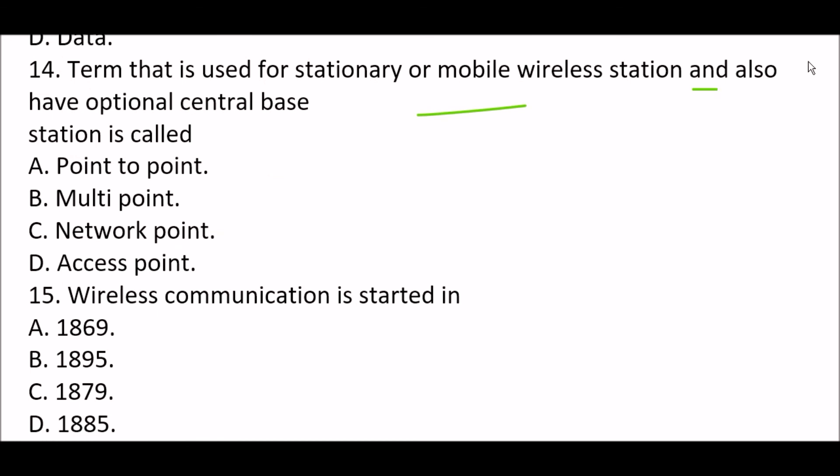Next question: The term used for a stationary or mobile wireless station that also has an optional central base station is called blank. Option A: point to point. Option B: multipoint. Option C: network point. Option D: access point. The right answer is Option D, access point. Access point is the term used for a stationary or mobile wireless station that also has an optional central base station.